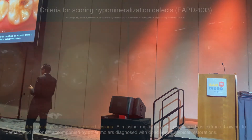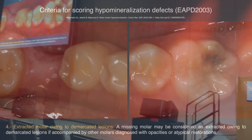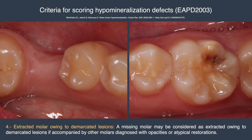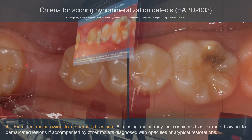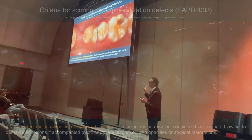The fourth criterion is molars missing due to MIH — especially if the other molars show some signs of MIH, like enamel breakdown, maybe some atypical restorations, maybe some opacities.